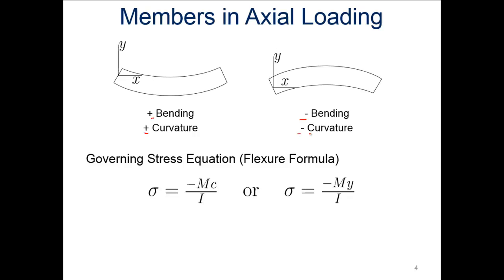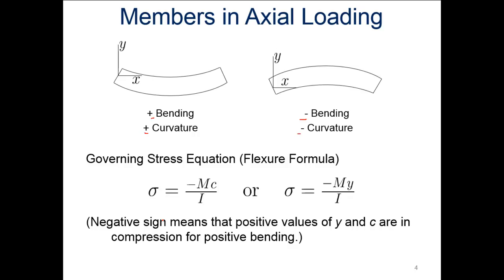As a result, our governing stress equation — the flexure formula — is that stress equals the negative of the moment times C divided by I, the moment of inertia. C can also be viewed as Y, the distance through the thickness of the material. The negative sign means that positive values of Y produce compression for positive bending.